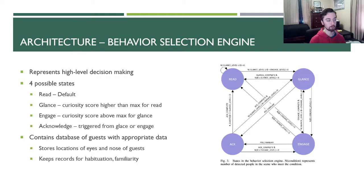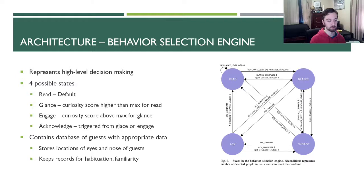The behavior selection engine handles high-level decision making — if the robot notices somebody, what does it do? There are four possible states: the reading state where the man simply reads his book; the glance state where the curiosity score exceeds the maximum for the read state; the engage state where the curiosity score rises above the max for the glance state, triggering disapproval or acknowledgement; and the acknowledgement state, triggered from the glance or engage state only if the person is recognized as familiar. There's also a database of guests storing eye and nose locations for face tracking as well as habituation and familiarity records.